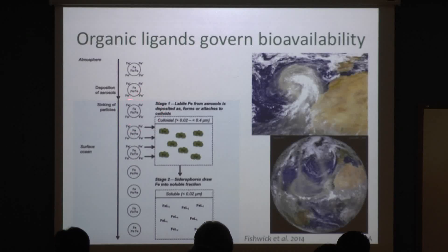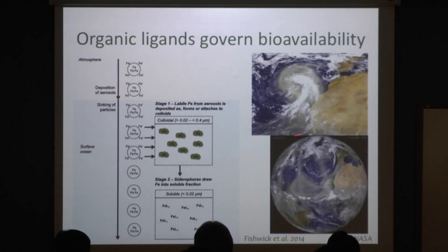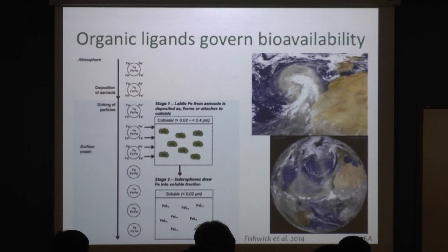As that particle enters the surface ocean, the first thing that happens is all of this inorganic iron on the surface starts to fractionate off into the water. You get this inorganic iron input right at the surface, but it's not soluble. So in the absence of organic ligands, these colloids will clump back together, form new particles, and they'll sink out of the ocean, which does no favors to the phytoplankton who can only really live where the light is, in the upper part of the water column.